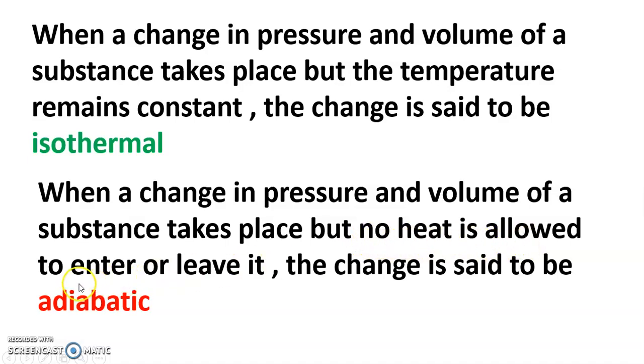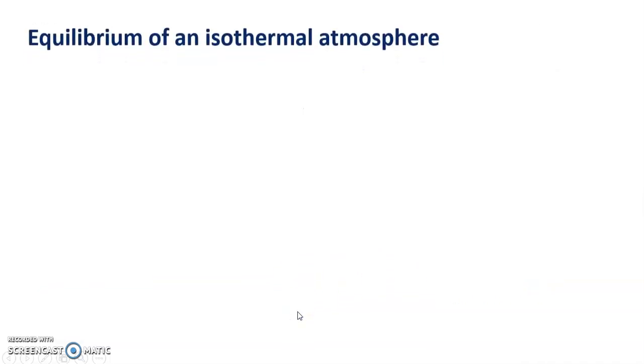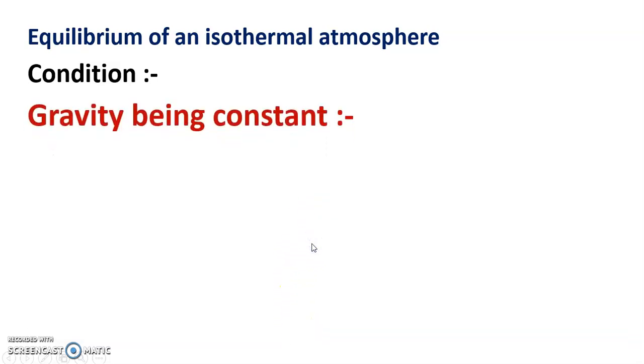When a change in pressure and volume of a substance takes place but no heat is allowed to enter or leave it, the change is said to be adiabatic. Equilibrium of an isothermal atmosphere: temperature condition, gravity being constant.